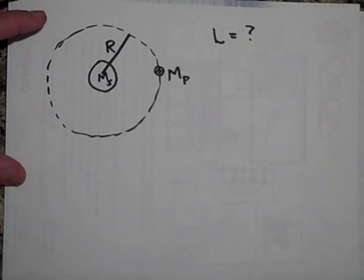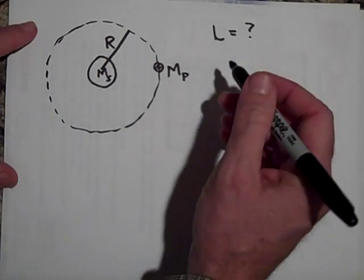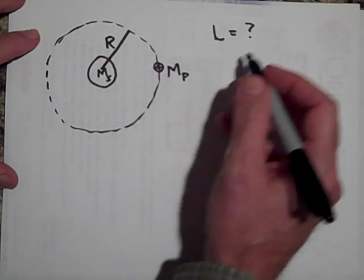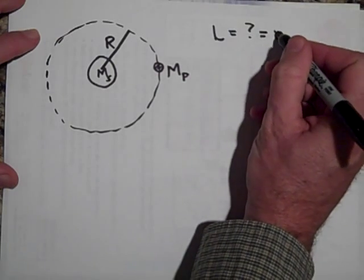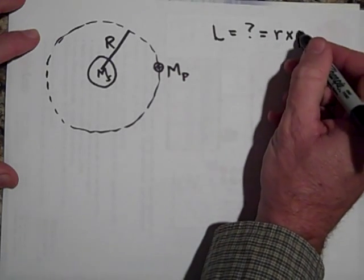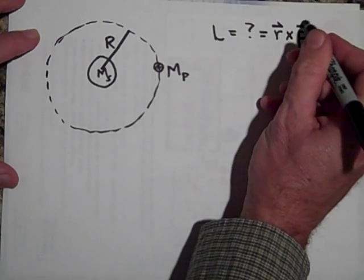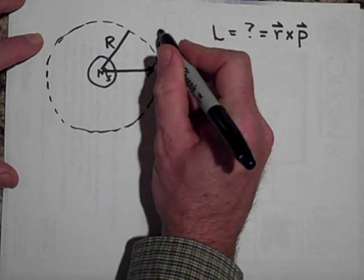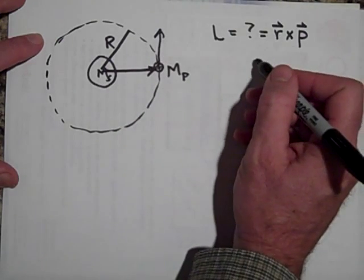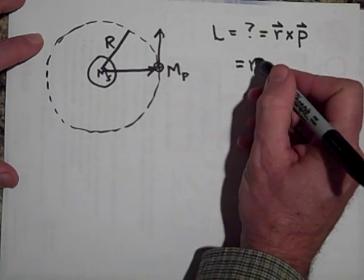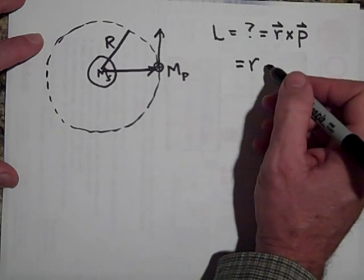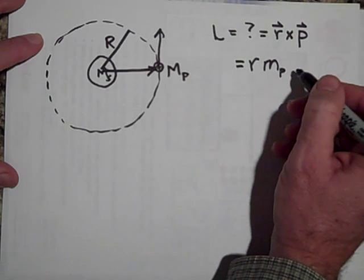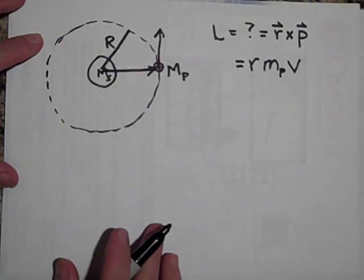Alright, we're back. So we have a mass of a sun, or a star rather, and a mass of a planet, and the planet's orbiting with a radius r. Can you try and give me what the angular momentum is of this star in terms of ms, r, the mass of the planet, and any constants?